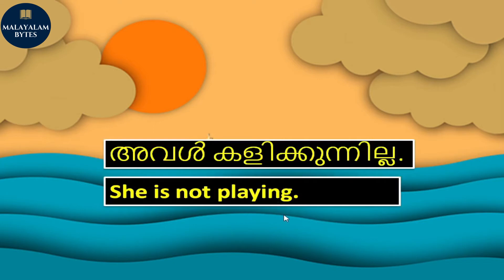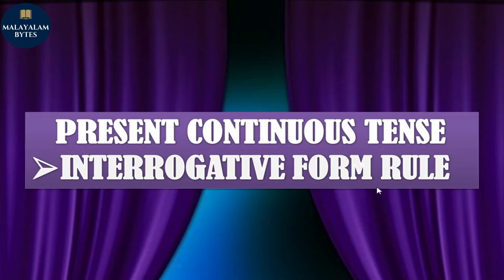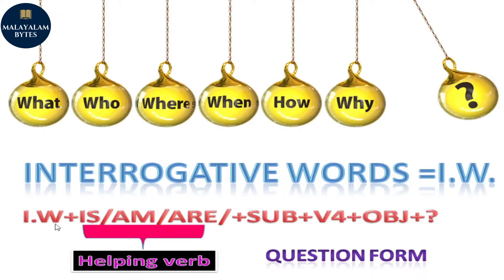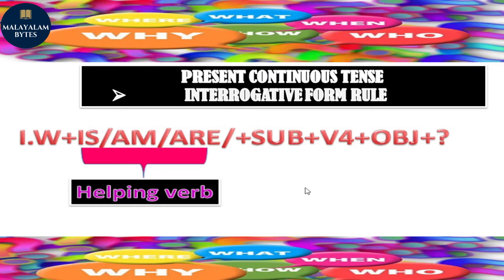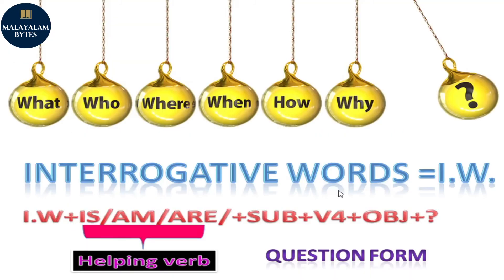In present continuous tense, let's look at the interrogative form. Interrogative words are placed at the beginning of interrogative sentences. These are the words we use to ask questions. When we use interrogative words, the sentence forms a question. So now we are dealing with the present continuous tense interrogative or question form. What is the rule?